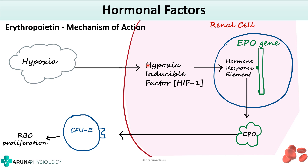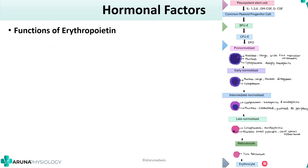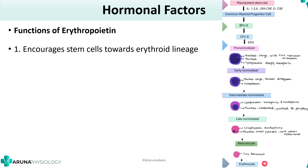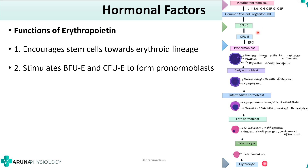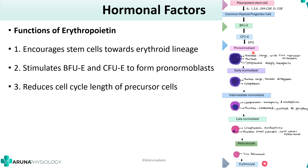The most important stimulus for erythropoietin production is hypoxia. The functions of erythropoietin: first, it encourages stem cells toward the erythroid lineage. Hematopoiesis occurs from a pluripotent stem cell, then committed stem cells which can go into the myeloid series or lymphoid series, and from the myeloid series certain cells go into the erythroid series. Erythropoietin also stimulates the BFU-E and CFU-E, which are the progenitor cells, to form the pronormoblast, enhancing conversion of progenitor cells to precursor cells. It also reduces the cell cycle length of the precursor cells, helping cells complete mitosis faster.